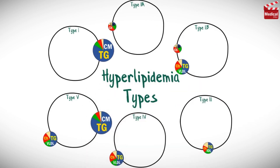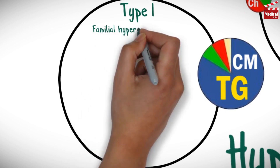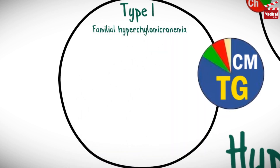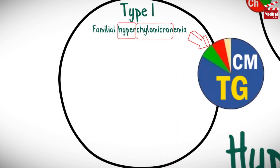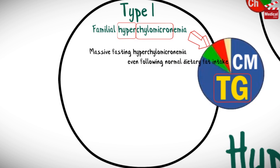There are five types, and type 2 is classified into two subtypes. Type 1 is called familial hyperchylomicronemia. It's obvious from its name that this type is characterized by a high amount of chylomicrons in the blood. We know from the previous video that chylomicrons carry a high amount of triglycerides. So this type is characterized by a massive fasting hyperchylomicronemia, even following normal dietary fat intake.